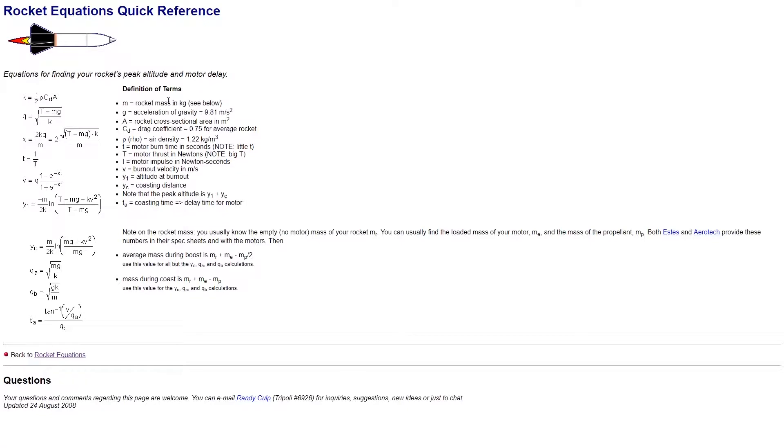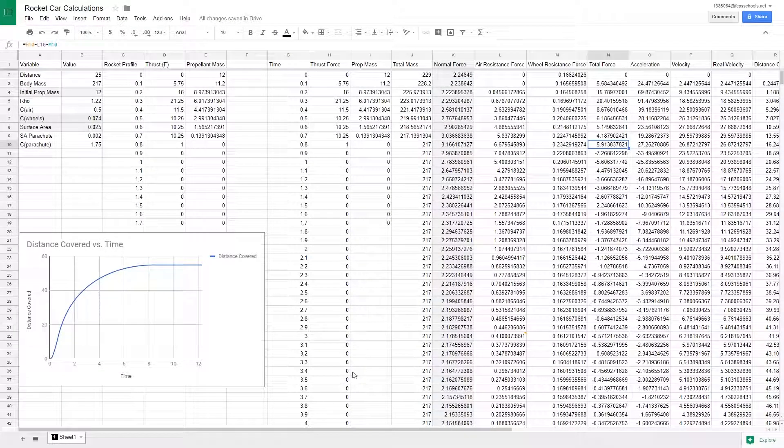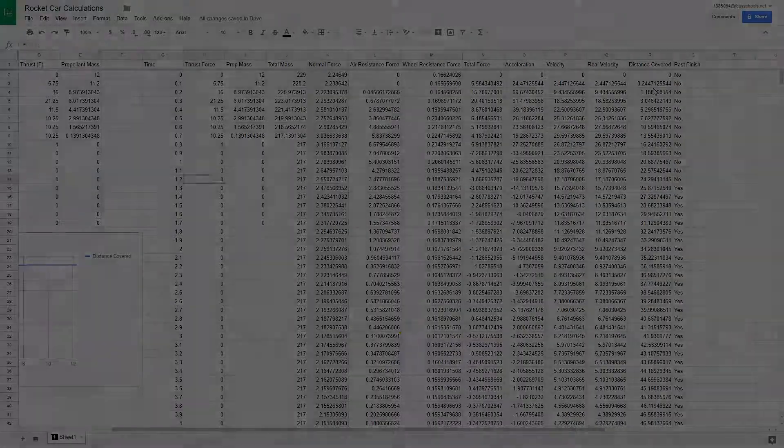Then using the Rocket Mine's nice catalog of different rocket equations, we plugged these into our spreadsheet and found that for each split second, the exact distance that the vehicle has covered, and therefore the exact moment that the rocket car has passed the finish line.